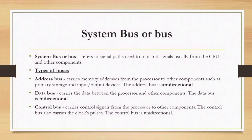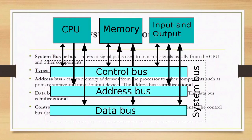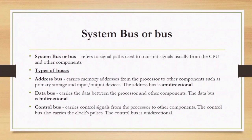The system bus refers to the signal path used to transmit signals, usually from the CPU to another component. We have three types of buses. The address bus carries memory addresses from the processor to other components such as primary storage. The data bus carries data between the processor and other components — the data bus is bidirectional, meaning it can both transmit and receive. The control bus carries control signals from the processor to the other components and is also bidirectional.